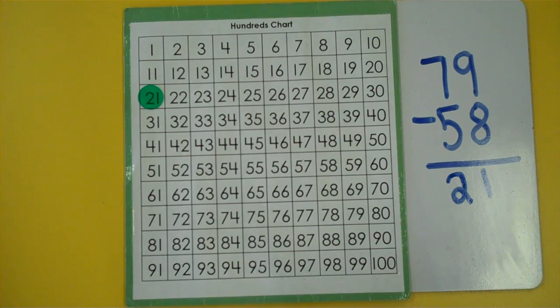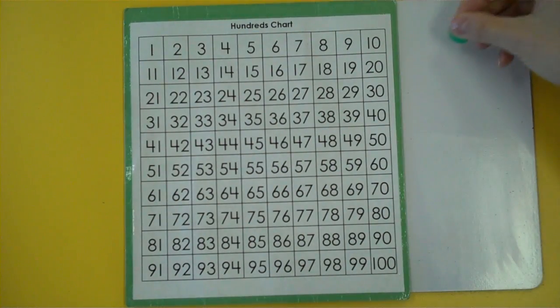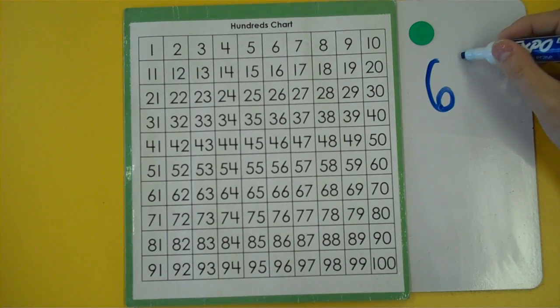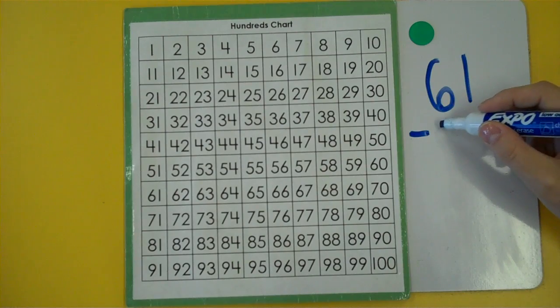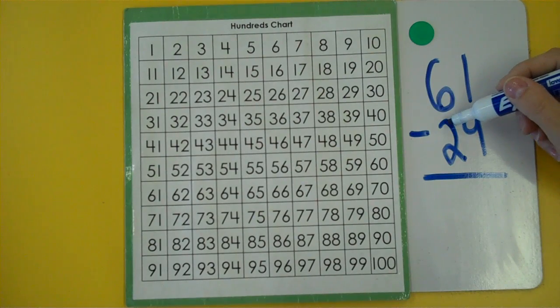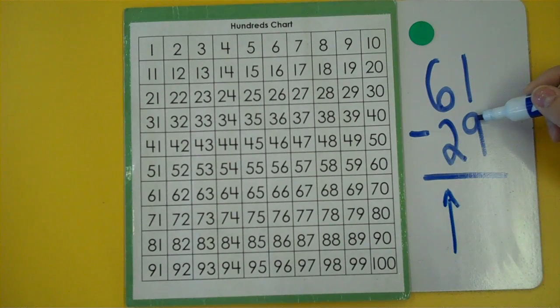Now it's time for you to try one on your own. Grab your hundreds chart and a marker and see if you can solve 61 take away 29. Don't forget, when you're skip counting by the tens place, you need to move up. When you're skip counting back by the ones place, you need to move to the left. Good luck.